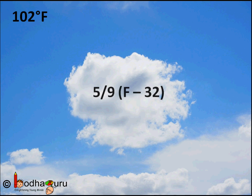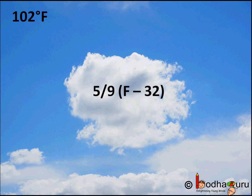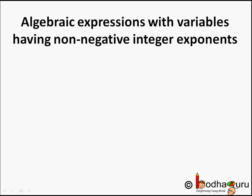Say today's temperature is 102 degrees Fahrenheit. What will be the temperature in Celsius? We know the formula. The reading in Celsius scale is equal to 5 by 9 into (f minus 32), where f is the reading in Fahrenheit scale. This is an example of an algebraic expression, as it has a variable which is f here, and it is also a polynomial. So what exactly is a polynomial?